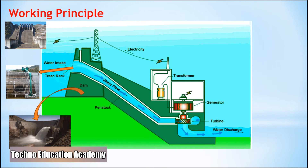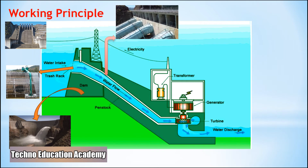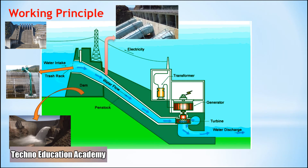The next component is the penstock and tunnels. Penstocks are the pipes which carry water from the reservoir to the turbine inside the power station. They are usually made of steel and are equipped with a gate system. Water under high pressure flows through the penstock — one end is connected to the dam side and the other to the turbine side. Tunnels serve the same function as penstocks and are used when an obstacle such as a mountain is present between the dam and the power station.